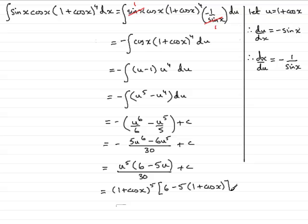Close the bracket off, and it was all over 30. All right, and don't forget the plus c on the end. Now, expanding this bracket, I can see that I'm going to get 6, take away 5, which is going to be just simply 1, and then minus 5 cos x.